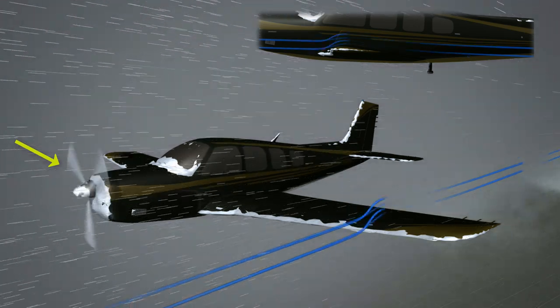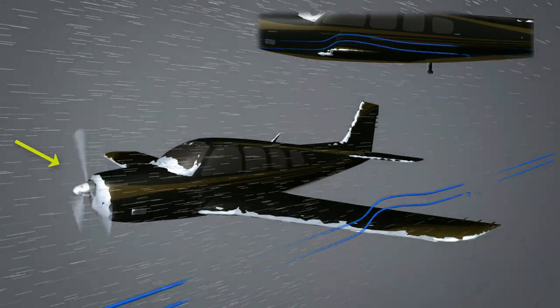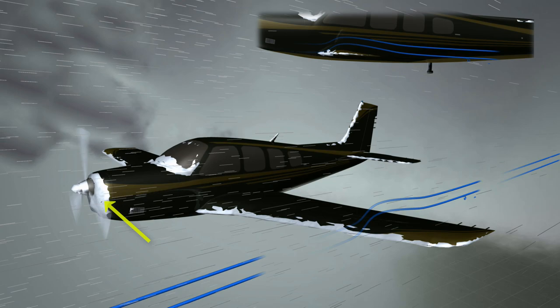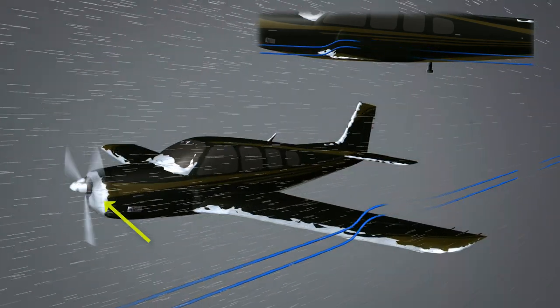On the propeller, ice creates an imbalance and decreased thrust. On the cowling, ice blocks air inlets, preventing engine cooling or blocking air intakes.